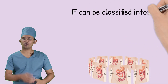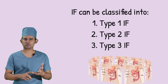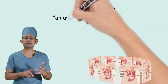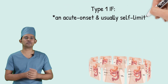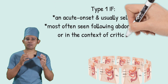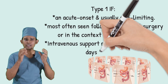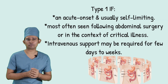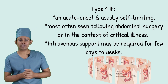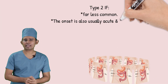The classifications of intestinal failure include three types: Type 1, Type 2, and Type 3. Type 1 is an acute onset, usually self-limiting condition with few long-term sequelae. It is most often seen following abdominal surgery or in the context of clinical illness, and intravenous support may be required for a few days to weeks.